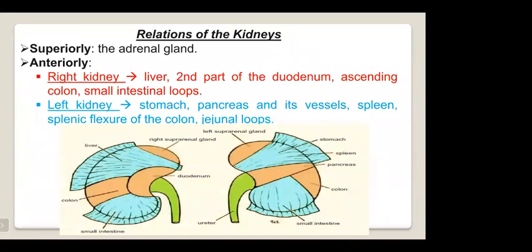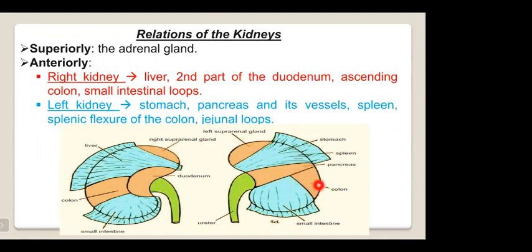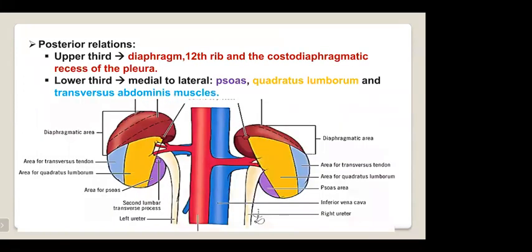Regarding the relations of the kidney: superiorly lie the suprarenal glands bilaterally. Anteriorly, the right kidney relates to the liver, second part of duodenum, ascending colon, and small intestinal loops. On the left side, anterior relations include the stomach, pancreas and its vessels, spleen, splenic flexure of the colon, and jejunal loops. The posterior relation: the upper third is the diaphragmatic area composed of the diaphragm, 12th rib, and costophrenic recess of the pleura; the lower part from medial to lateral includes psoas, quadratus lumborum, and transversus abdominis.